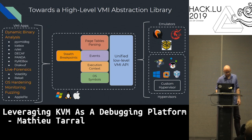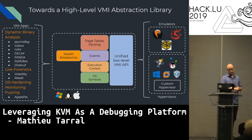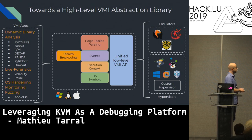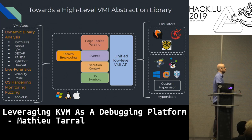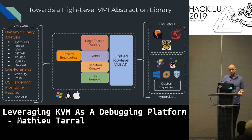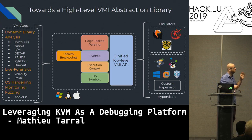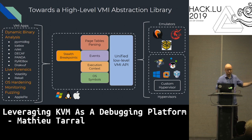Looking at concrete applications that already exist: PyVMI DBG, Icebox, RVMI, the Decaf and Panda frameworks, Pyrebox, and Rakuf. For live forensics, Volatility and Rekall — you should plug them on hypervisors and emulators. And the recent AFL++ by Brandon Falk for fuzzing. We want to plug all of these applications to have multi-hypervisor and multi-emulator support by building this library.